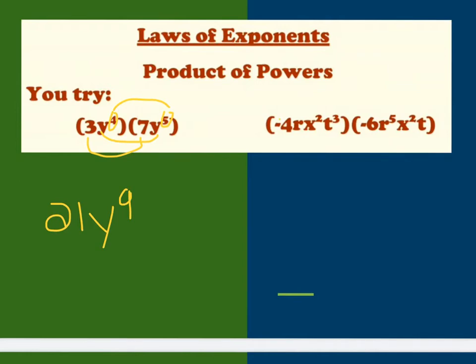And for the next one, I'm going to again multiply my numbers, so negative 4 times negative 6 is a positive 24. And then I'm going to add my exponents.